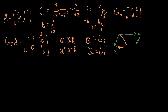I only want to eliminate this element here — so this one. I will find my cosine and my sine. My cosine will be given by the top element of this vector, so 1, over the square root of this element squared plus the element we want to eliminate squared.